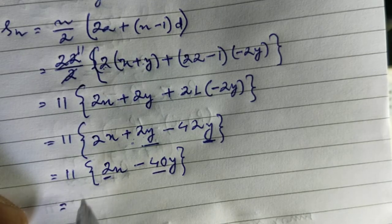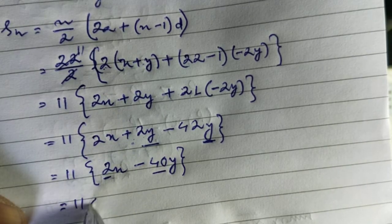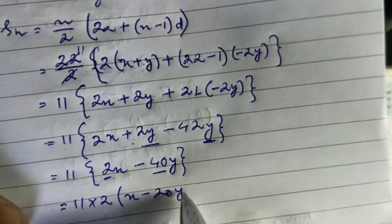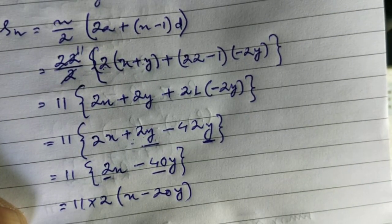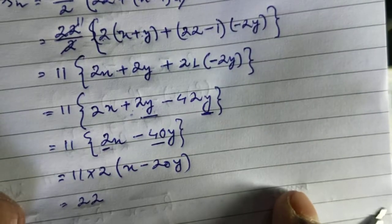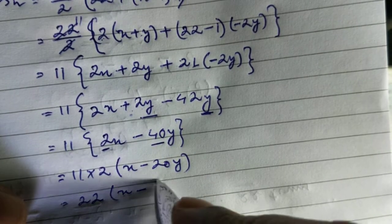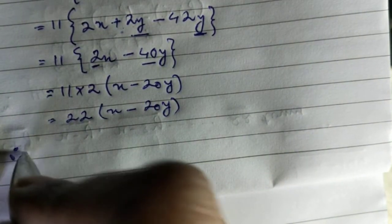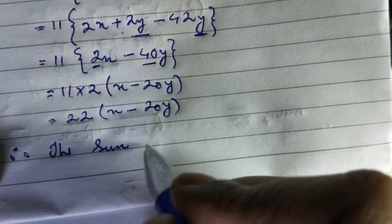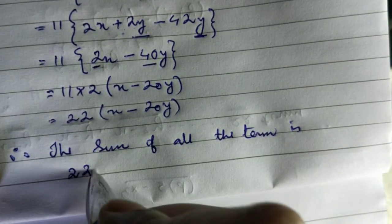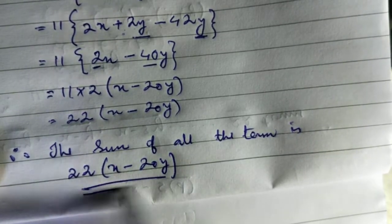We can take 2 as the common factor, so 11 times 2 is 22, giving us 22 times (x minus 20y). Therefore, the sum of all the terms is 22(x minus 20y).